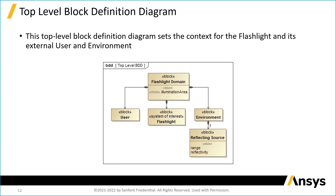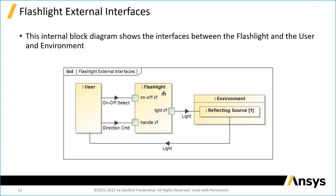In this view we're looking at what's called an internal block diagram. That means we're looking at the internals of that higher-level context part. Once again we see the flashlight, the user, and the environment — again a black box view — but now we're seeing how the flashlight interconnects with the user and the environment and the flows between them. We introduce these ports, these three ports, which are connection points or interaction points on the flashlight.